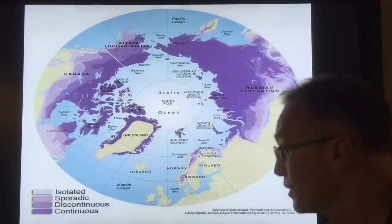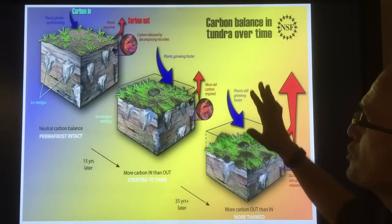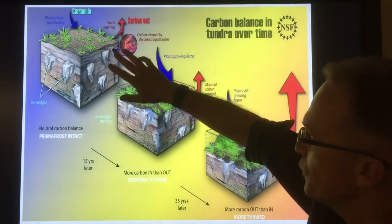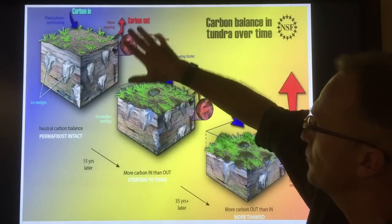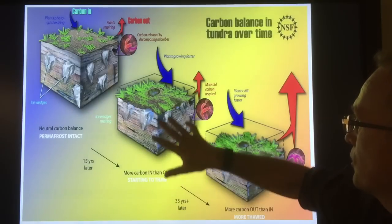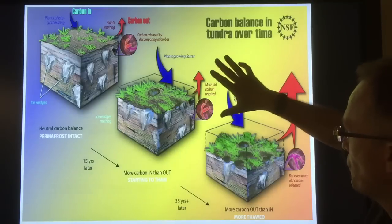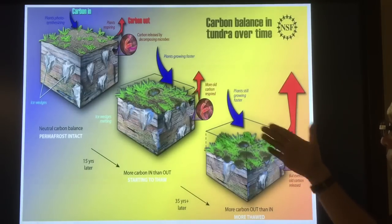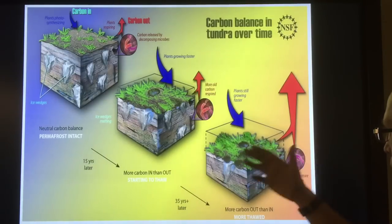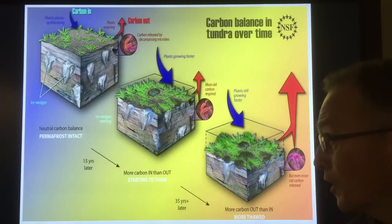The warming will thaw the permafrost, releasing CO2 and methane. This cartoon shows how with permafrost intact we have a neutral carbon balance — some coming in, some going out with plant respiration. As warming begins, plants grow faster with more respiration of older carbon. At even higher temperatures, there's far more carbon coming out than going in, as indicated by the larger red arrow representing the thawing permafrost.